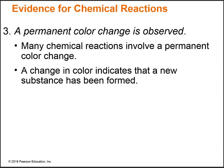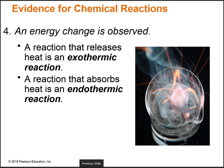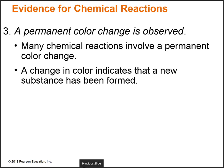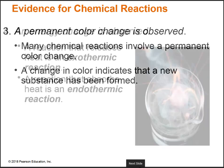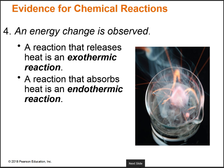The third piece of evidence is a permanent color change. If you take two solutions, mix them together, and go from having two clear solutions to a pretty blue or purple, that indicates you've made something new — a new substance has been formed. The final piece of evidence is a change in energy. If a reaction is going on in a beaker and the beaker gets hot, that's releasing heat — that's called an exothermic reaction. Exo means outward or out, and therm means heat, so heat is moving out of the reaction.